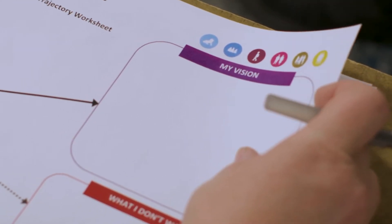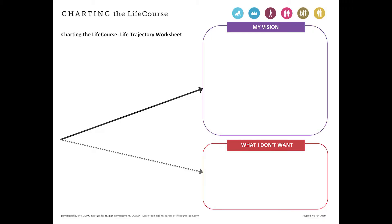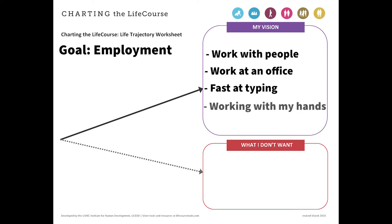The first step to using the Life Trajectory Worksheet is to facilitate a conversation about what makes life good for the individual with a disability. For example, if the good life involves working, then different types of jobs the individual is interested in are identified.